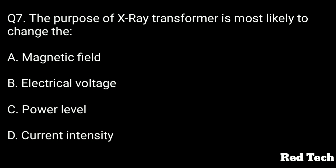Question number seven: the purpose of an X-ray transformer is most likely to change — option A is magnetic field, option B is electrical voltage, option C is power level, option D is current intensity. As we know, the purpose of an X-ray transformer is to change the electrical voltage.